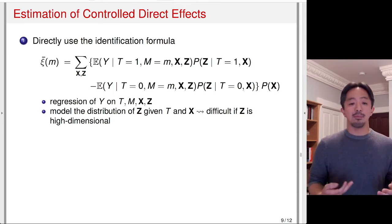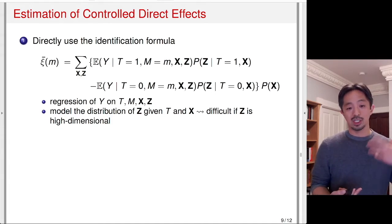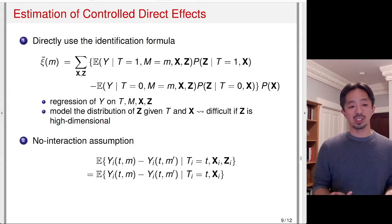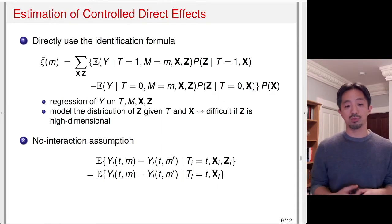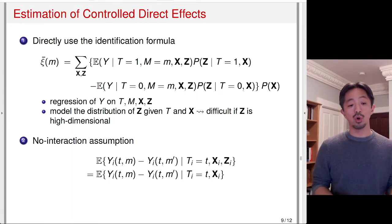The disadvantage of this approach is that you have to do this additional modeling step of Z given T and X. The second approach is to sidestep this additional modeling step of the post-treatment confounder. To do so, we assume an additional assumption: no interaction.